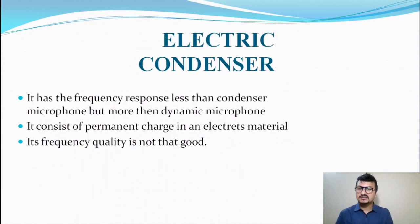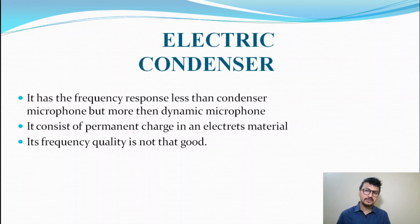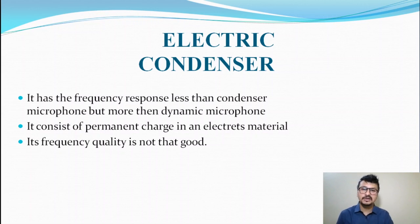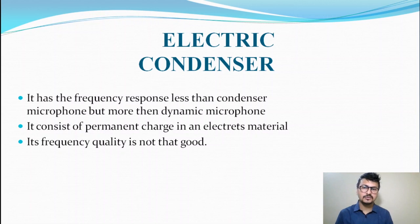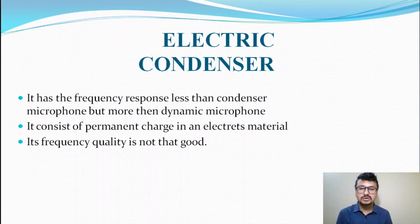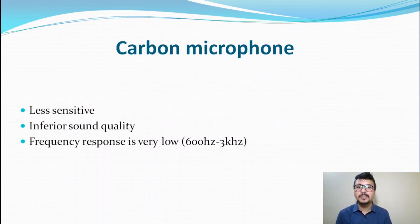The electret condenser microphone has a frequency response less than a standard condenser microphone but more than a dynamic one — it sits in the middle range. It consists of a permanent charge in an electret material. Its frequency quality is not as high, which is one of its drawbacks.